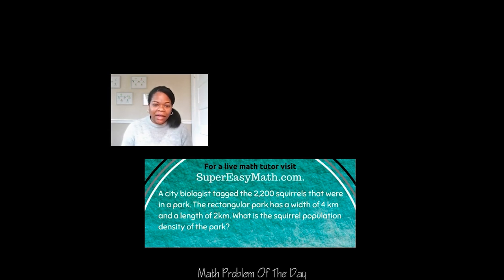Today's math problem of the day says a city biologist tagged 2,200 squirrels that were in a park. The rectangular park has a width of four kilometers and a length of two kilometers. What is the squirrel population density of the park?